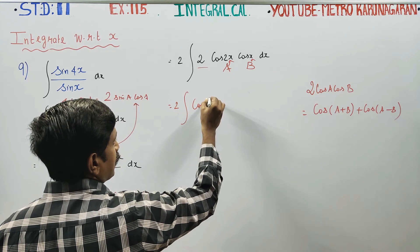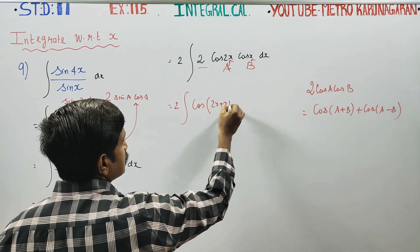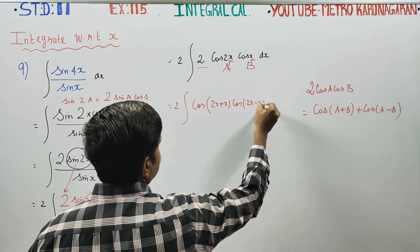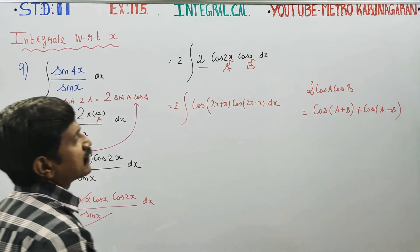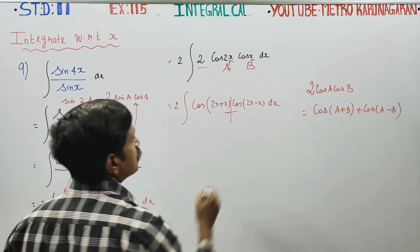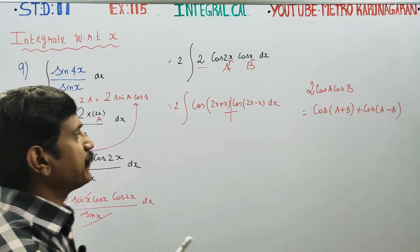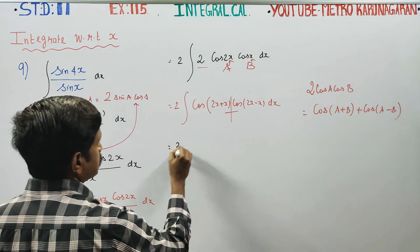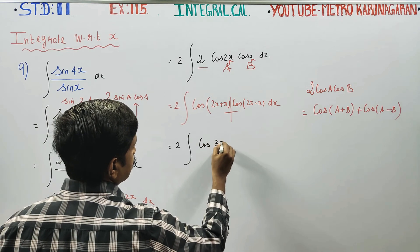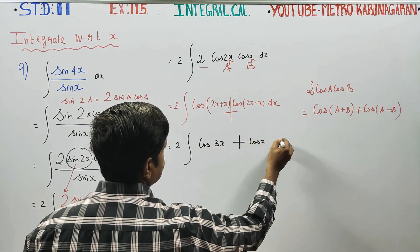So we get cos(2X + X) plus cos(2X − X), which gives cos 3X plus cos X. Therefore the integral becomes 2 times the integration of cos 3X plus cos X dx.